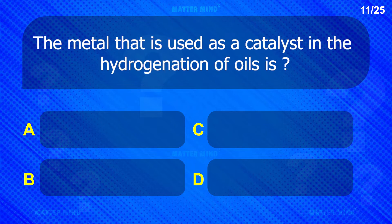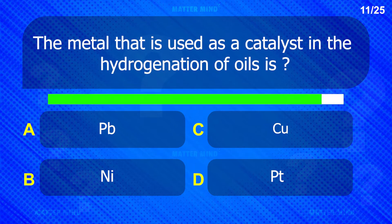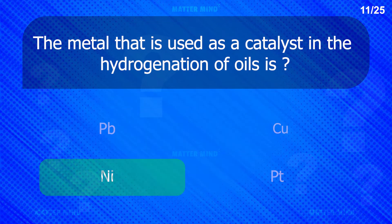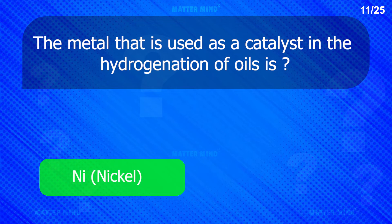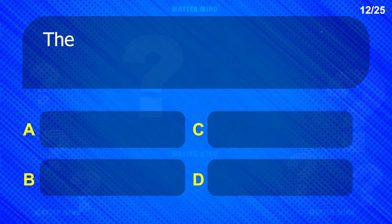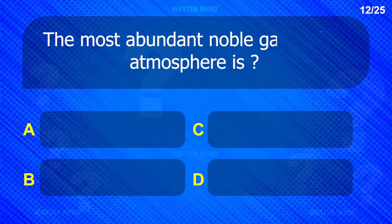The metal that is used as a catalyst in the hydrogenation of oils is nickel.